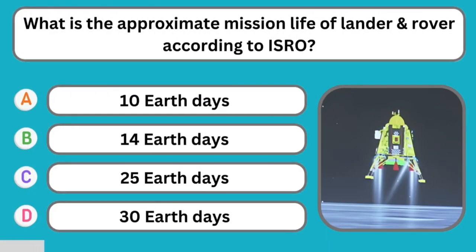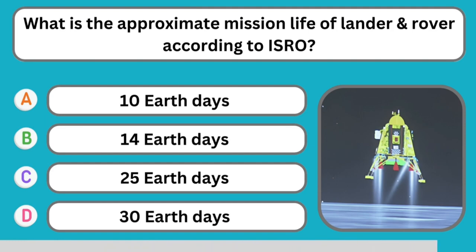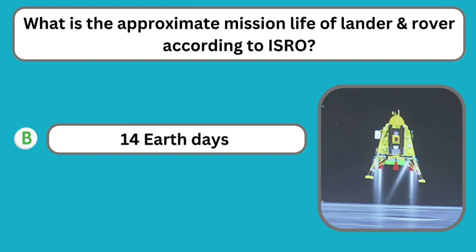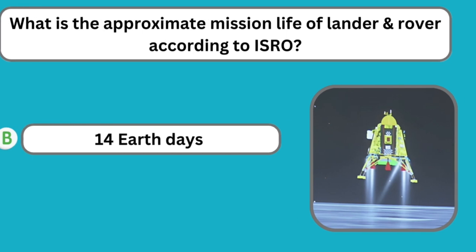Question number thirty-one: What is the approximate mission life of the lander and rover according to ISRO? The correct answer is 14 Earth days. The life of the lander and rover on the surface of the moon is 14 days.